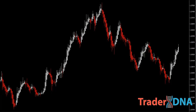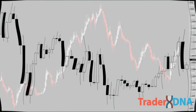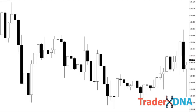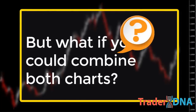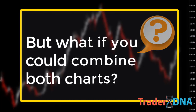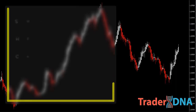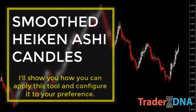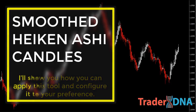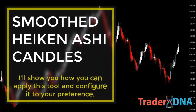Although Heikin Ashi has many advantages, a lot of traders prefer to analyze classic candlestick charts. But what if you could combine both charts in order to have the classic candles and still be able to plot Heikin Ashi candles? We can do that by using smoothed Heikin Ashi candles. In today's video, we'll take a look at the Heikin Ashi smoothed indicator, and I'll show you how you can apply this tool and configure it to your preference.